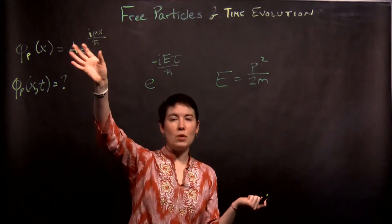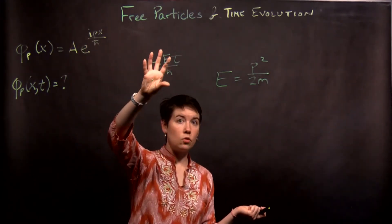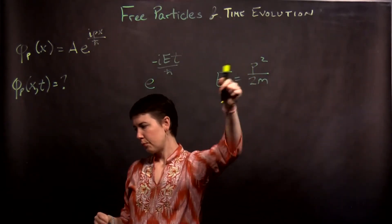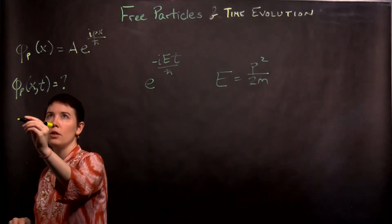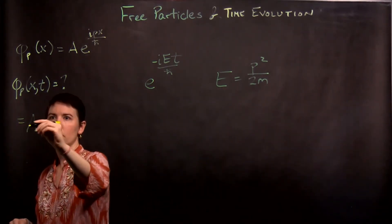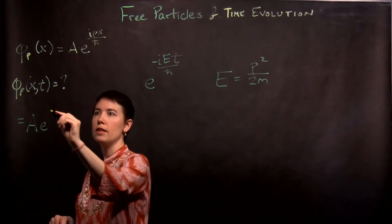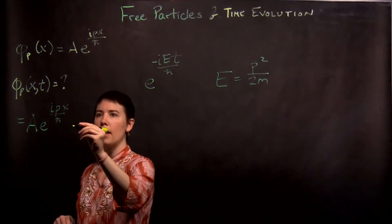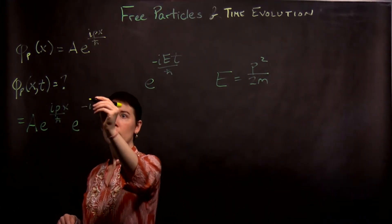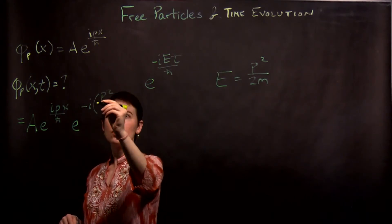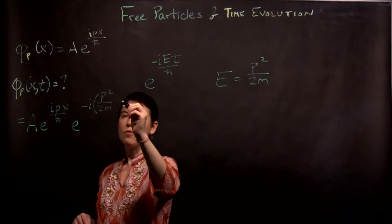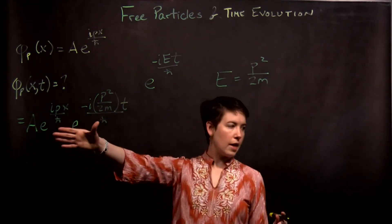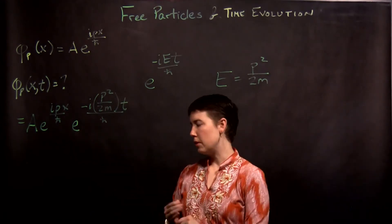The good news is we can treat this as a state with a well-defined energy, which means we can directly apply the time evolution term. We take our original spatial function — e to the i px over h-bar — and multiply it by that time dependence term. But now instead of E, we are going to call this p squared over 2m, rather than just introducing one more term. Notice that this is now two exponentials multiplied by one another.